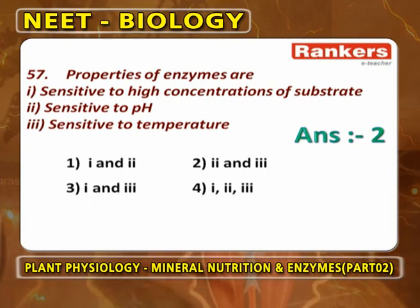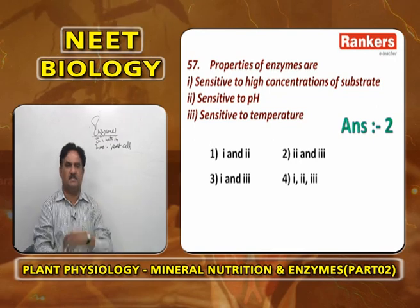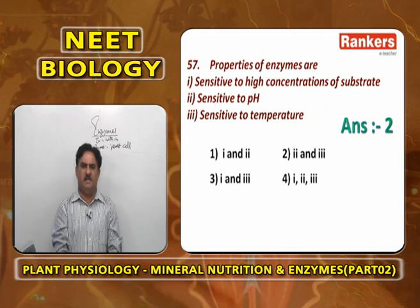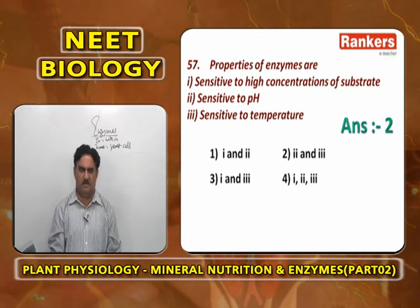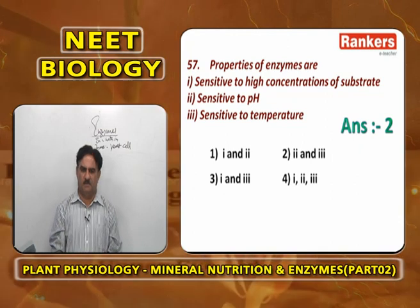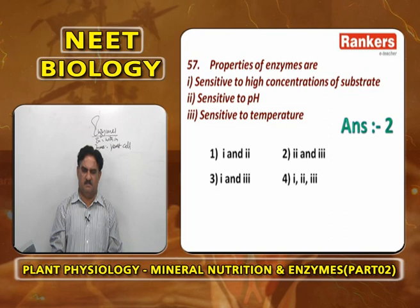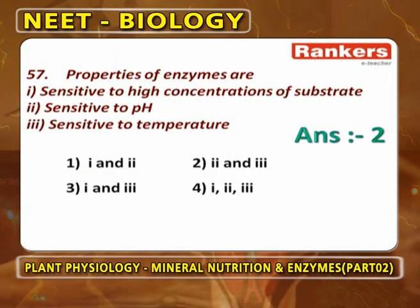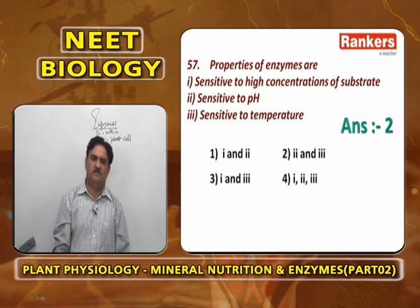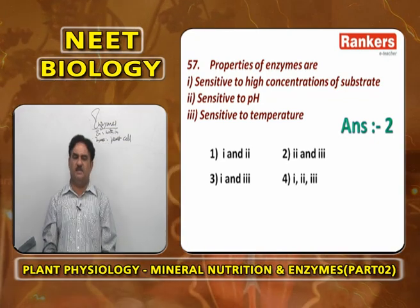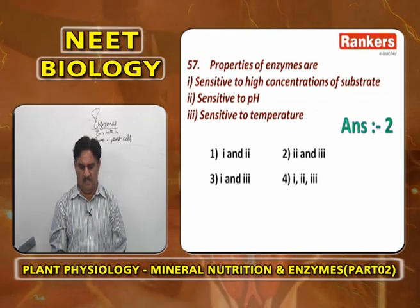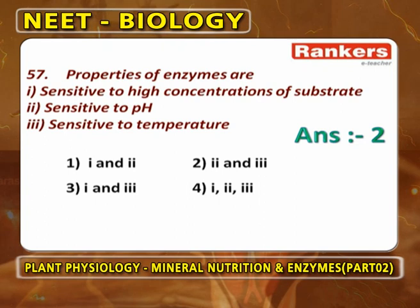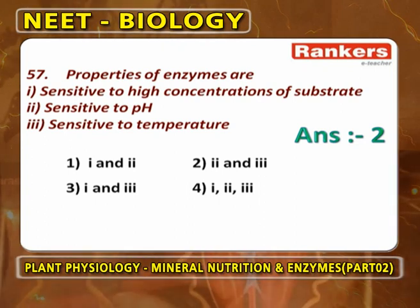Sensitive to temperature is called thermolability. At high and low temperatures, enzymes become inactive because they are made up of proteins. This property is widely used in refrigerators — food is kept fresh because enzymes in food material or fungal/bacterial spores become inactive at low temperature. So the properties of enzymes are sensitivity to pH and sensitivity to temperature — options 2 and 3.